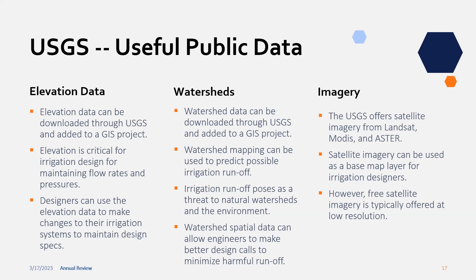Designers can use elevation data to make changes to their irrigation systems and design specs by overlaying the CAD irrigation design over the elevation raster data. If watersheds are a concern because there's a creek or lake nearby, and you're using chemigation or fertilizers, watershed data can be downloaded and added to the GIS project — likely as vector data. Watershed mapping can be used to predict possible irrigation runoff. You can look at your elevation raster data and identify where runoff from sprinklers could go, and account for that in your designs to mitigate any natural threat to watersheds.